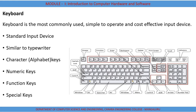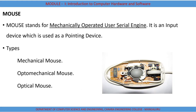Mouse is also an input device. Mouse stands for Mechanically Operated User Serial Engine. It is a pointing device normally used to move the cursor on a screen and for selection of particular data in a computer. The different types of mouse available are mechanical mouse, optomechanical mouse, and optical mouse.